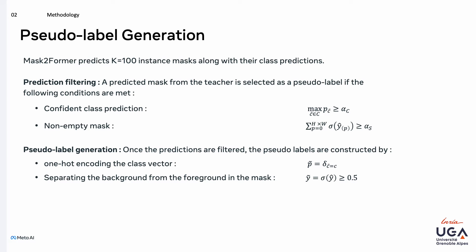Our implementation is based on Mask2Former, in which the segmentation head predicts a constant set of binary masks and a corresponding class prediction for each mask. To filter out pseudo-labels from the irrelevant predictions, the predictions need to fulfill two conditions. First, the predicted class must be predicted with a relatively high probability, imposed by a threshold on the predicted class. Second, the predicted mask needs to be non-empty, which is verified using a threshold on the size of the mask, defined as the sum of the predicted probabilities of each pixel belonging to the foreground. Once these predictions are filtered, we construct the pseudo-labels by one-hot encoding the class prediction and separating the background from the foreground using a threshold on the predicted logits in each mask.